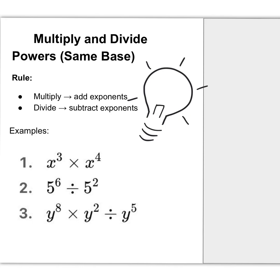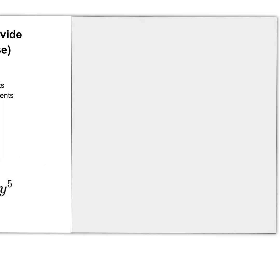Multiply and divide powers with the same base. The rules are: when you're multiplying, add the exponents; and when you're dividing, subtract the exponents. Let's jump in.